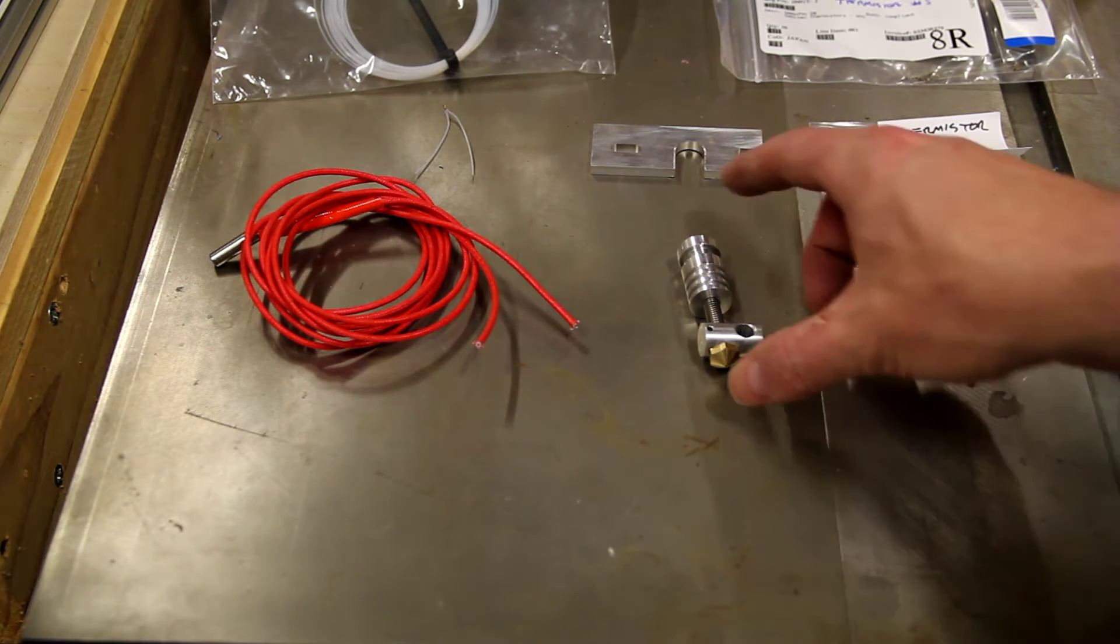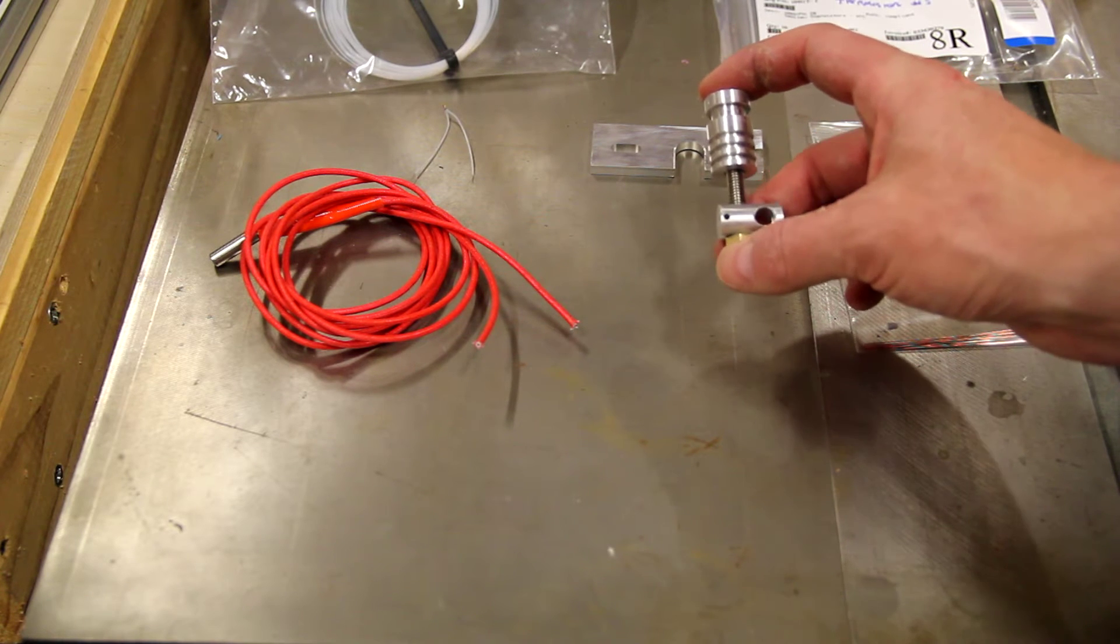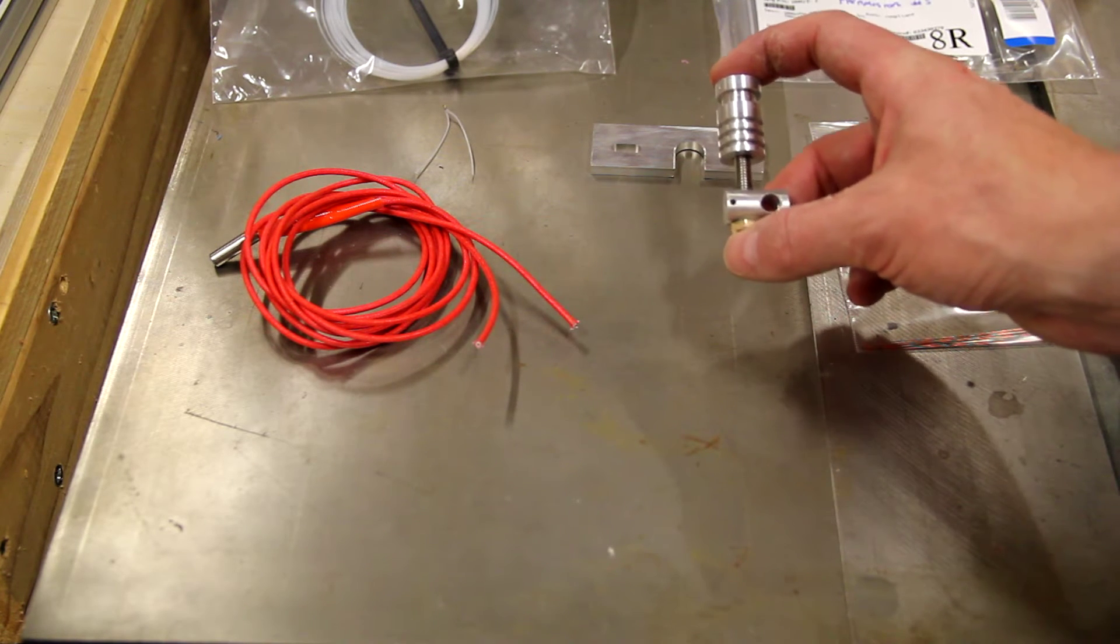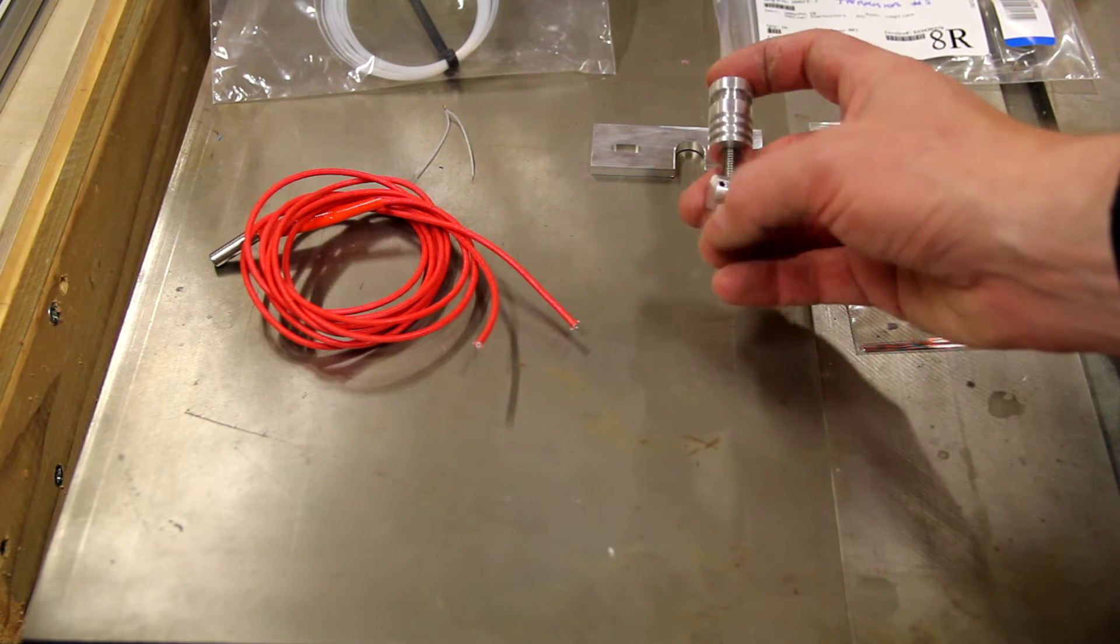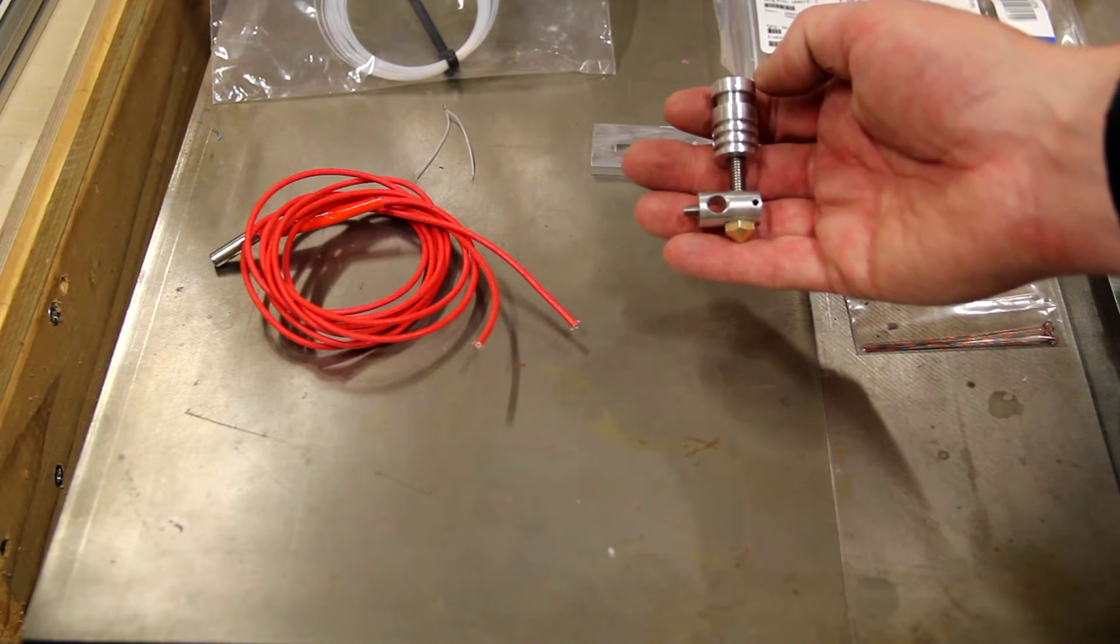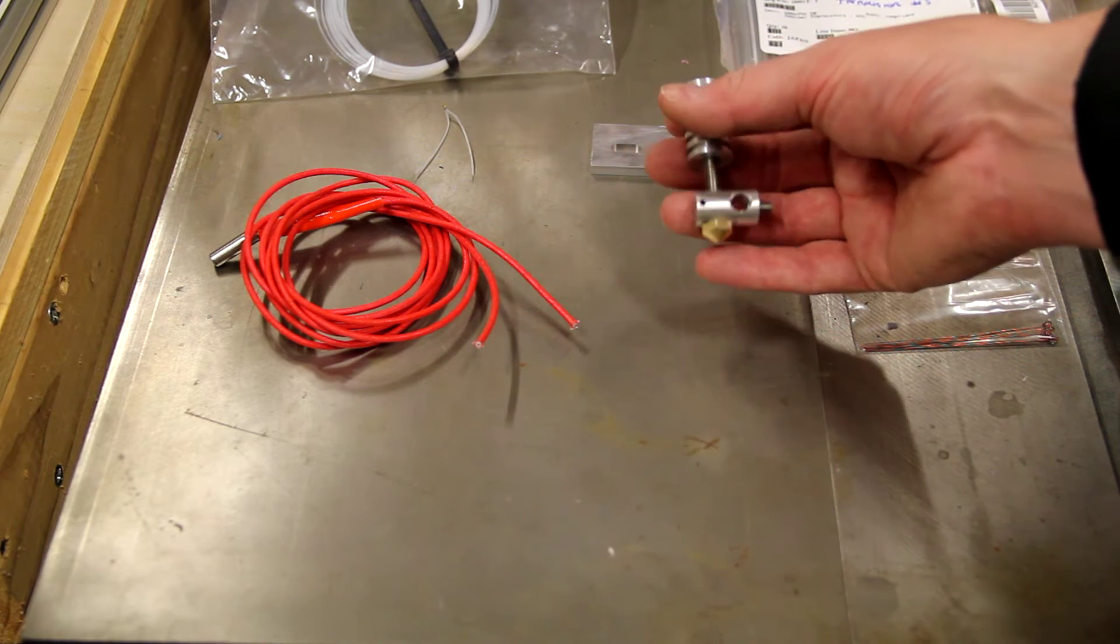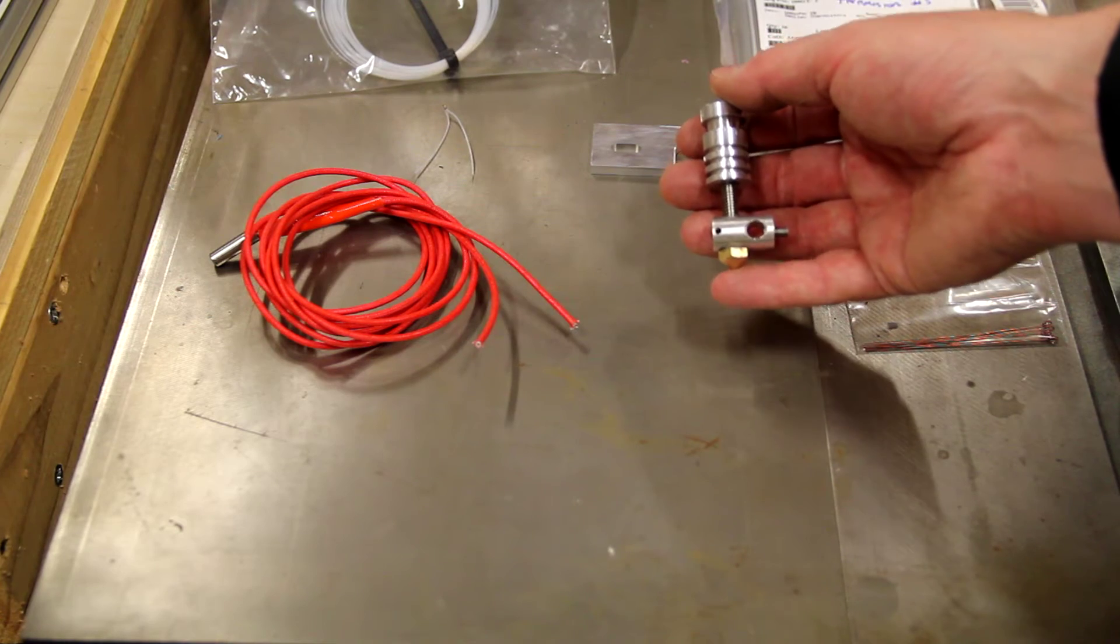What this is right here is the Alu hotend v4 that's made by 3D Industries in Australia. If you go to their website they will sell one to you. This is not actually an all metal hotend even though it looks a lot like the Magma. This is what I would call a mostly metal hotend.